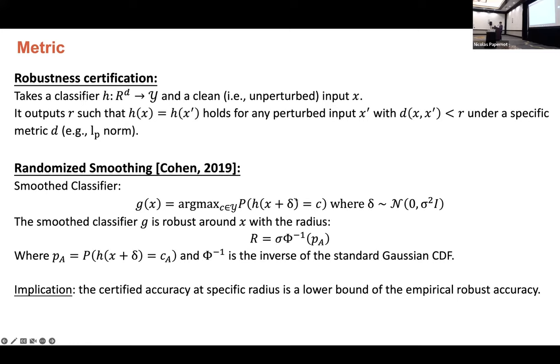And one popular certification method is randomized smoothing from Cohen. It will smooth a base model h with Gaussian noise. And based on the Neyman-Pearson lemma, the smoothed classifier g will be robust around the x with such radius. So pA is just the top confidence of the prediction. And implication is that certified accuracy we obtain here at some specific radius is just a lower bound of the corresponding empirical robustness accuracy.